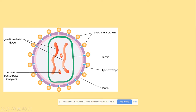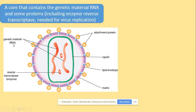Viruses do not have DNA — they have RNA. So the genetic material is RNA, as mentioned, and some proteins. Of course, an enzyme is a protein, so make sure you remember that.